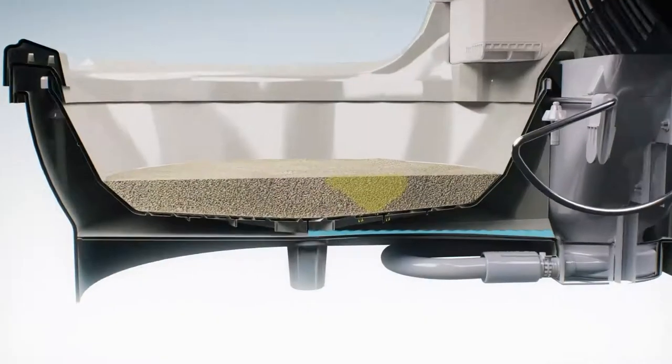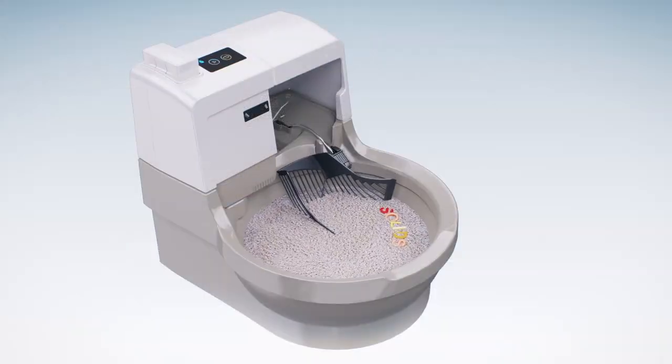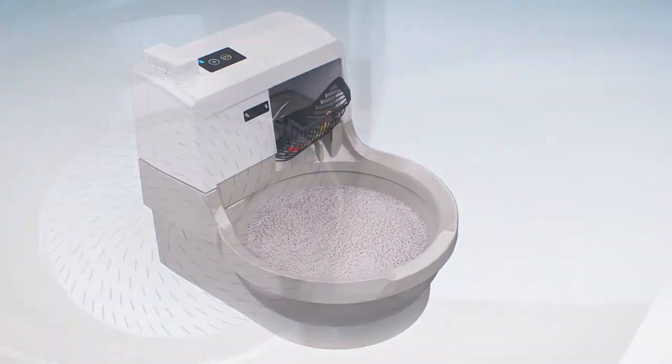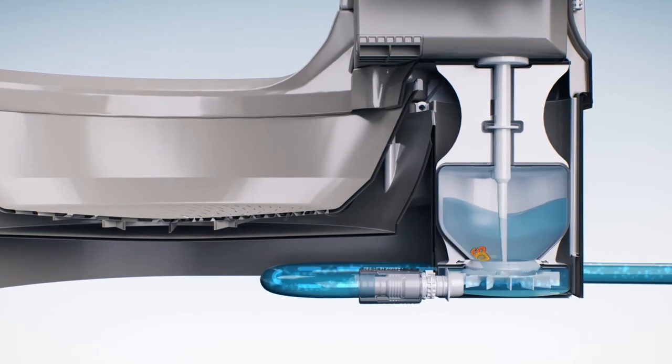When your cat visits their Cat Genie, liquid waste drains into an odor-killing sani solution. Then solids get scooped into the hopper to be liquefied, and all waste is flushed down the drain or toilet and out of your home for good.